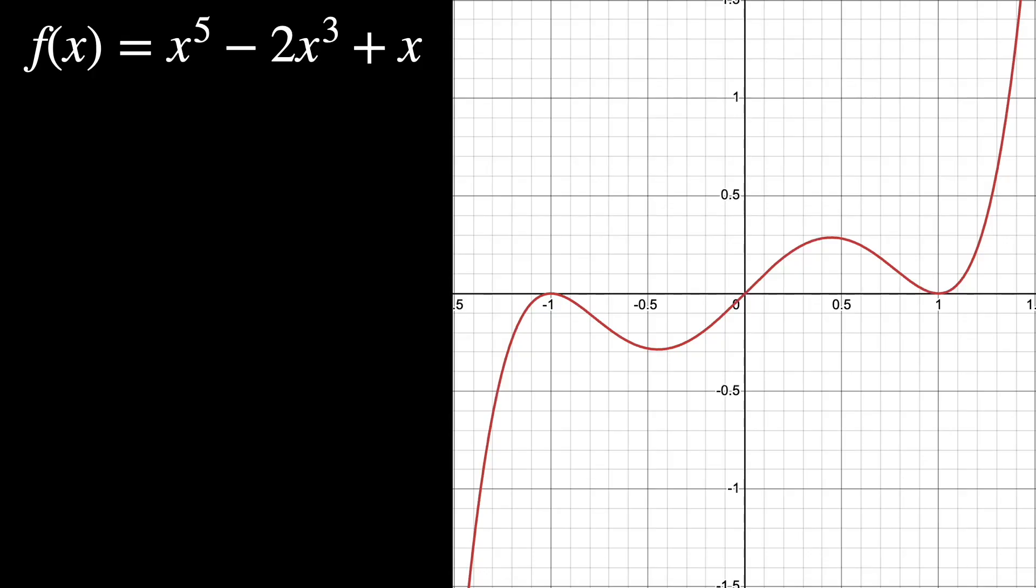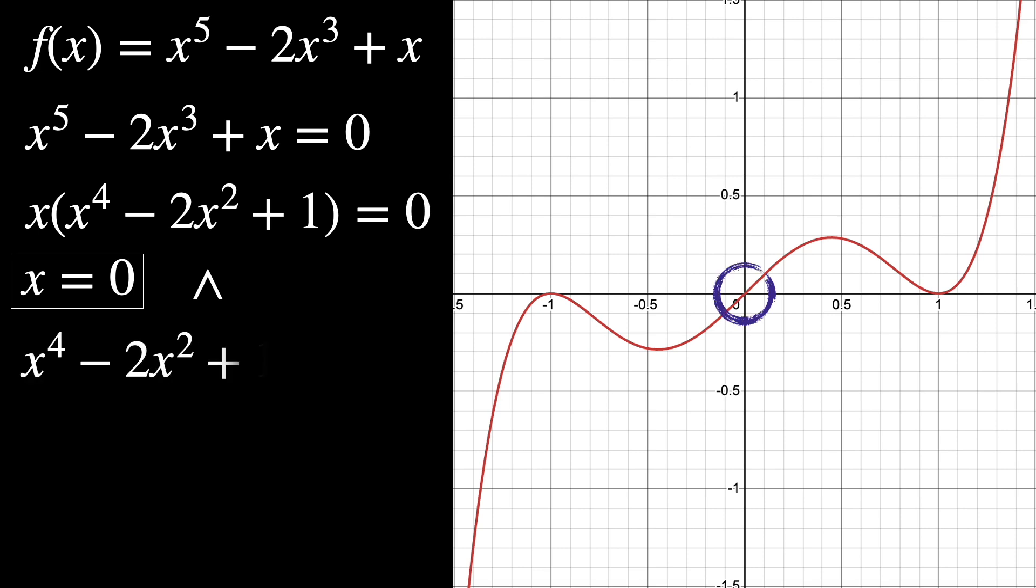Let's look at this example of a quintic equation. If we put it equals to 0, we can try to find the roots by factoring it into x and this polynomial inside the parenthesis. Then we can clearly see that one of the roots is 0 and the other one we need to find. So if we use all the formulas we already know to solve this quartic equation, we'll find that x is plus and minus 1. And these are the three roots of this polynomial.